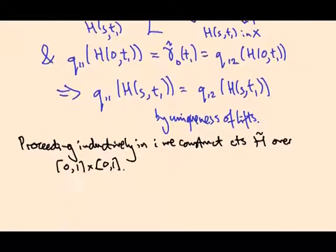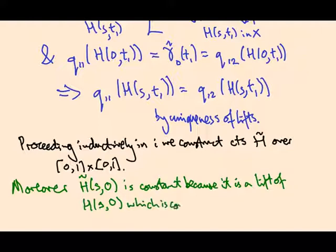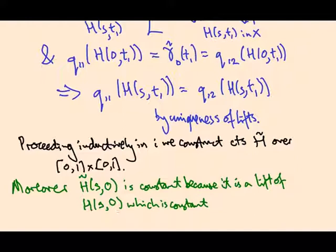So let's prove this. So moreover, h tilde(s, 0) is constant because it is a lift of h(s, 0) which is constant. Right, so if you remember we started out with a homotopy rel endpoint so it was constant at this end, constant at this end. So downstairs the path h(s, 0) is constant, therefore the lift has to be constant because it is a lift of the constant map and lifts are unique.